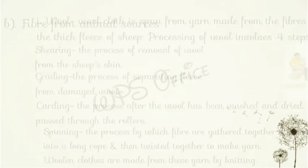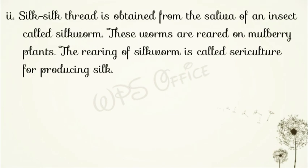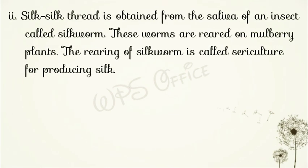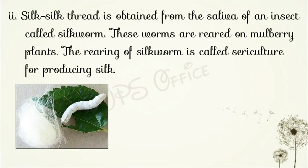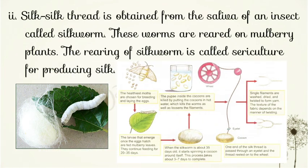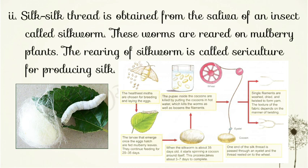The second animal fiber is silk. Silk is obtained from the saliva of an insect called the silkworm. Silk का धागा जो है वो एक कीड़े से प्राप्त होता है जो उस कीड़े के saliva यानी लार के जमने से बनता है। These worms are reared on mulberry plants — इन कीड़ों को ज्यादातर mulberry (शहतूत) के पेड़ों की पत्तियाँ खाकर ये कीड़े बड़े होते हैं। The rearing of silkworm for producing silk is called sericulture.